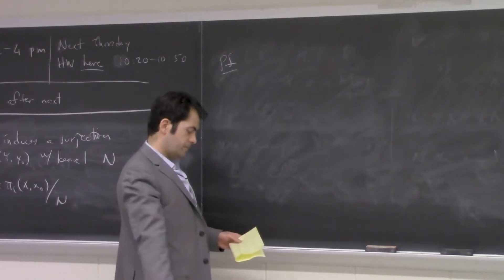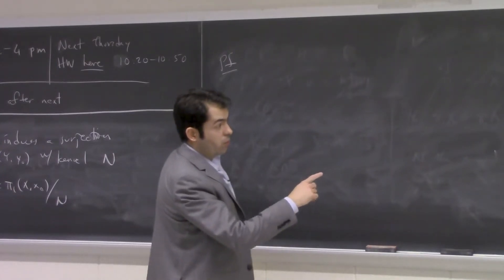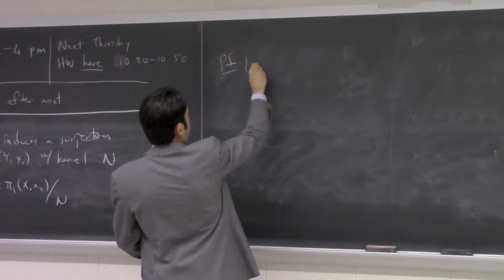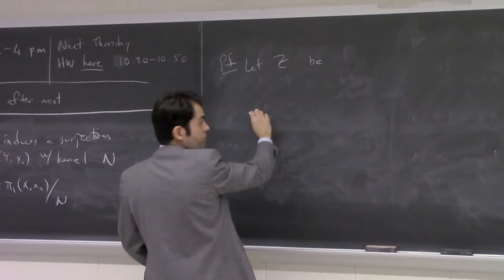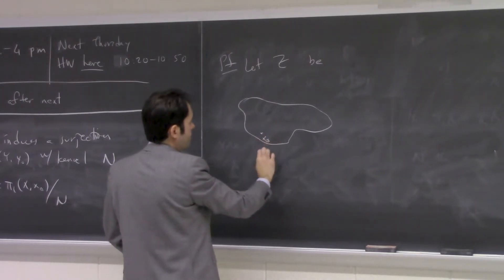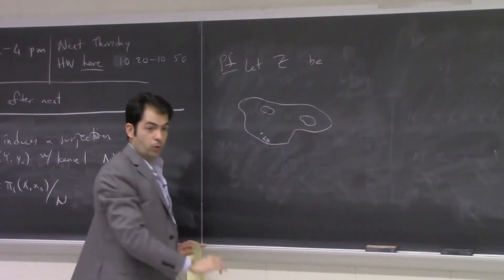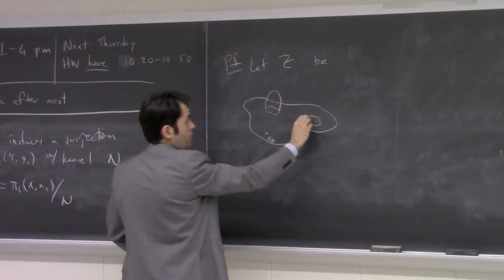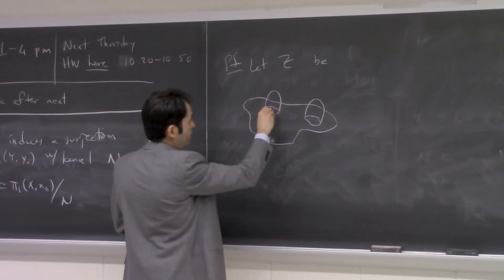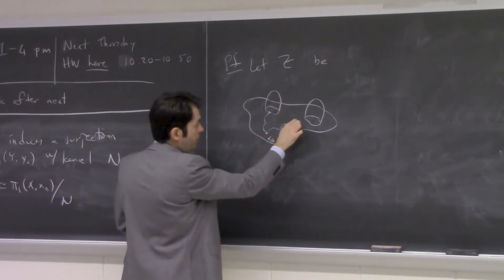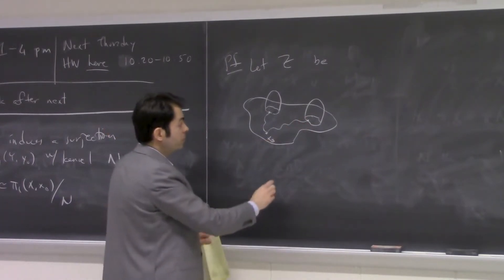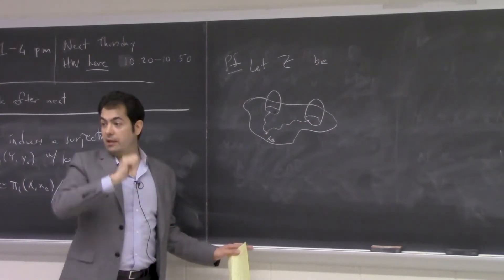To prove this, we replace Y with an equivalent space that makes it easier. Let Z be the space obtained from Y by attaching a strip along each gamma_alpha, with the right ends attached to the 2-cell alpha and the left ends of the different strips mutually identified. So above x_0 there's just a single little interval shared by all the strips.